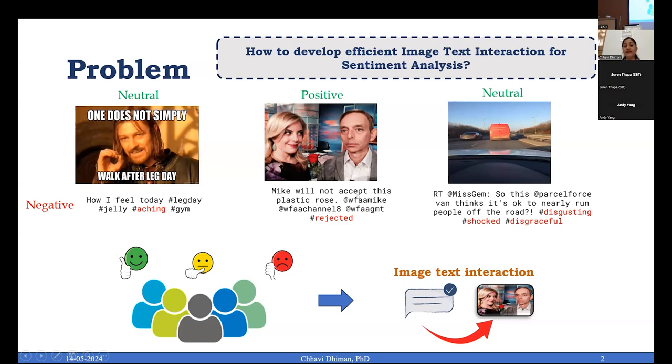So they are just going far apart, polar apart. In that case, if we start analyzing them independently, we will always get different results. The challenge is how you can make an efficient image to text interaction, an efficient way of understanding the textual data and images to understand the true sentiments involved.